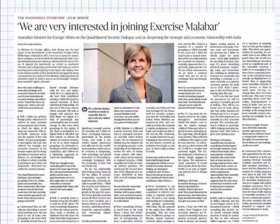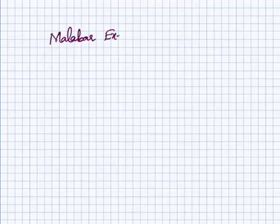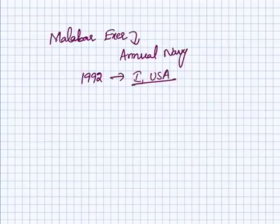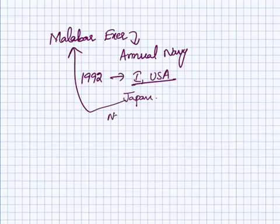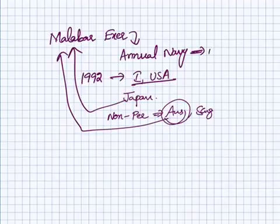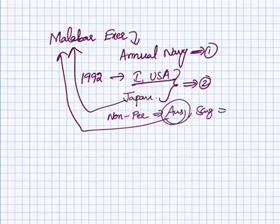The next article requires us to know about Exercise Malabar. These are annual naval exercises. When started in 1992, India and USA were the two permanent members. Now Japan has also become a permanent member. Australia and Singapore are two non-permanent members, with Australia actively seeking permanent membership.